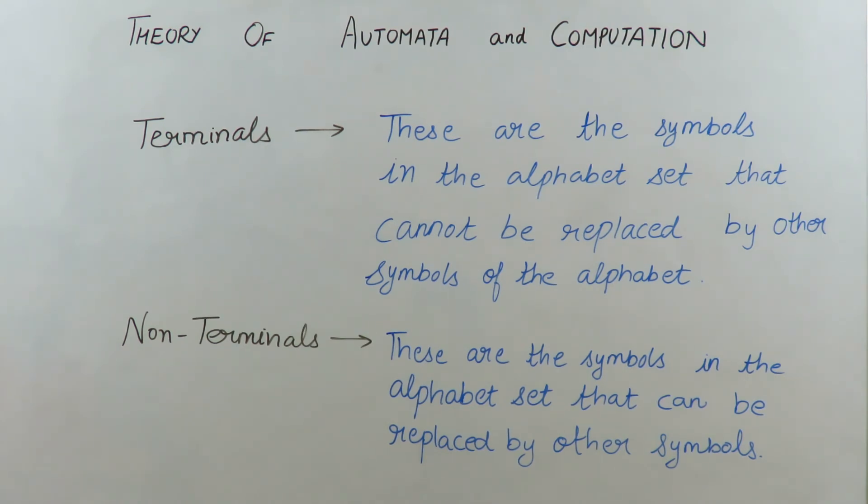We are now ready to move on to the next topic, grammars, which is the most important topic in automata. We have cleared our concepts about the three main entities of theory of automata and computation: alphabet, strings, and language. If you have any doubts, please drop an email at the address mentioned in the description. To watch our full playlist, click here; to go to our previous video, click here; and to subscribe, click here and then click the bell button. Please like our video.